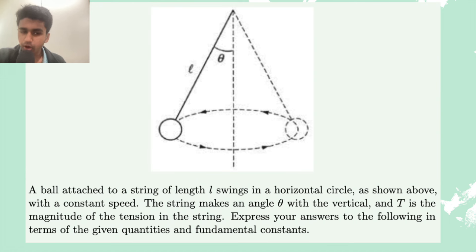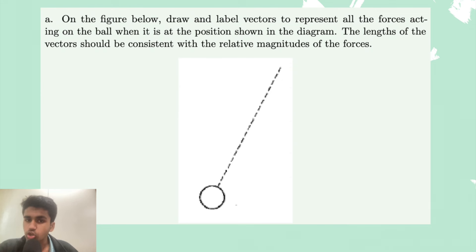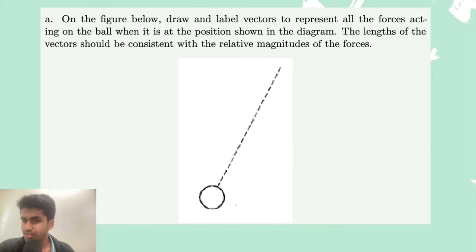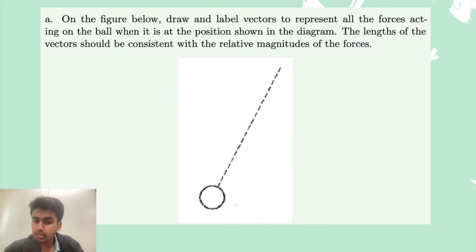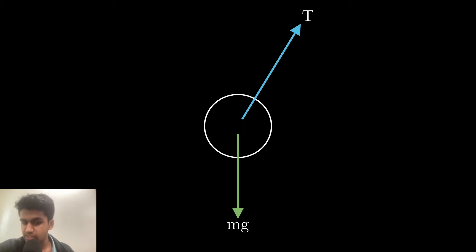Now our second FRQ. A ball attached to a string of length L swings in a horizontal circle with constant speed. The string makes an angle theta with the vertical and T is the magnitude of the tension in the string. Express your answers in terms of the given quantities and fundamental constants. Part A: draw and label vectors to represent all the forces acting on the ball. The lengths of the vectors should be consistent with the relative magnitudes of the forces — so the arrow for a larger force should be drawn longer. There are only two forces on this object: tension force, which points diagonally, and gravitational force, which points straight down.